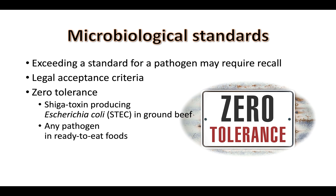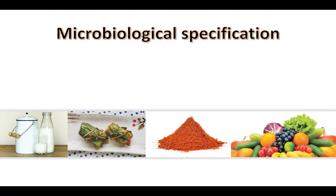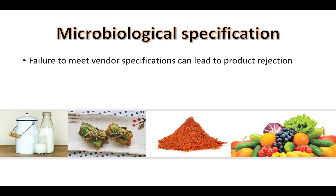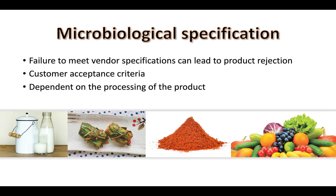This means if you have a positive test result for these pathogens in these products, you must recall. Microbial specifications are microbial limits set between a buyer and a supplier. Failure to meet your buyer requirements can lead to product rejection and potentially loss of that buyer. These microbiological specifications are going to be dependent on the product and the type of processing. For example, pasteurized or cooked products typically have microbial specifications that are low for aerobic plate count, Enterobacteriaceae or coliforms, lactic acid bacteria, yeast, and mold.